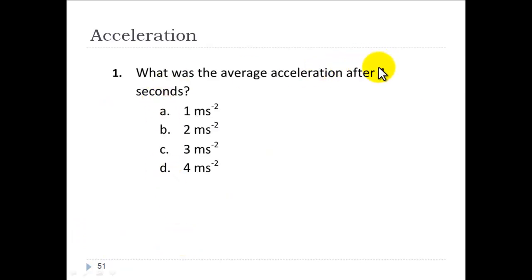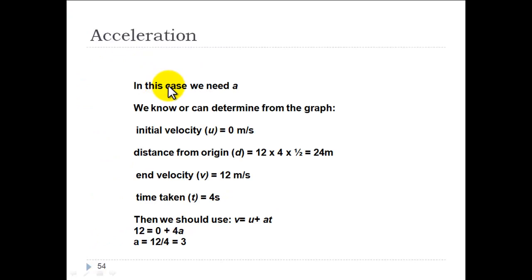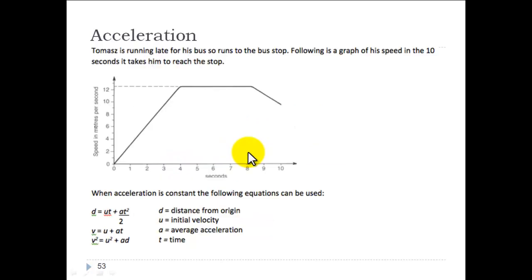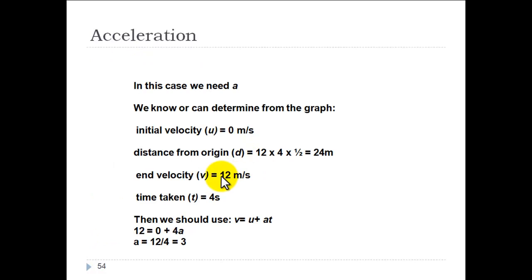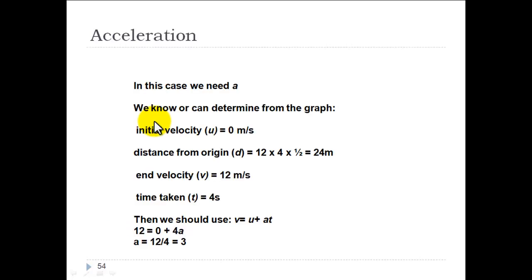Going back to the question. Average acceleration after 4 seconds. We have time equals 4. We have the initial velocity because he started at 0. And the distance from the origin also. We need A. We know or can determine from the graph that the initial velocity U equals 0. Distance from the origin D equals, going back to this graph, D equals 12 times 4 times a half, which equals 24 metres. This is the 4 seconds here and we just found the area under the graph, which is what we did last time.